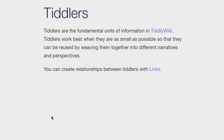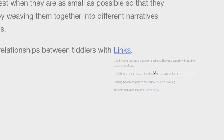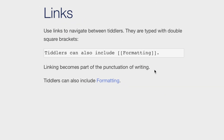You can create relationships between tiddlers with links. They are typed with double square brackets so that linking becomes part of the punctuation of writing.